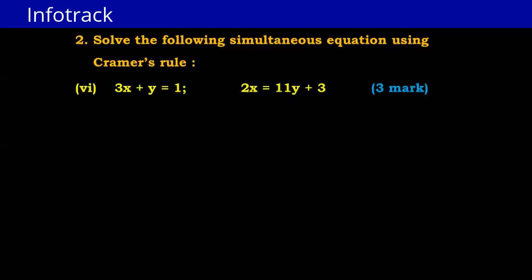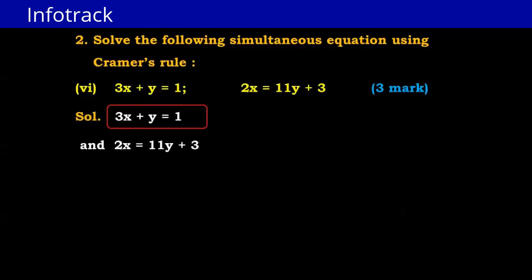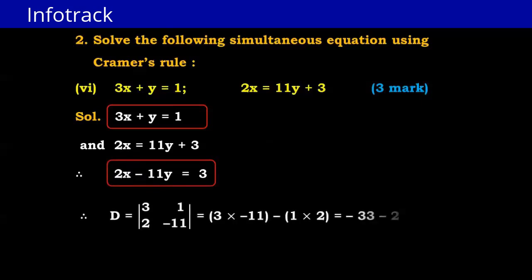Next question: 3x + y = 1 and 2x = 11y + 3. We write the first equation as 3x + y = 1, and rearrange the second as 2x − 11y = 3. From this we write D with a1=3, b1=1, a2=2, b2=−11. So D = 3×(−11) − 1×2 = −33 − 2 = −35.